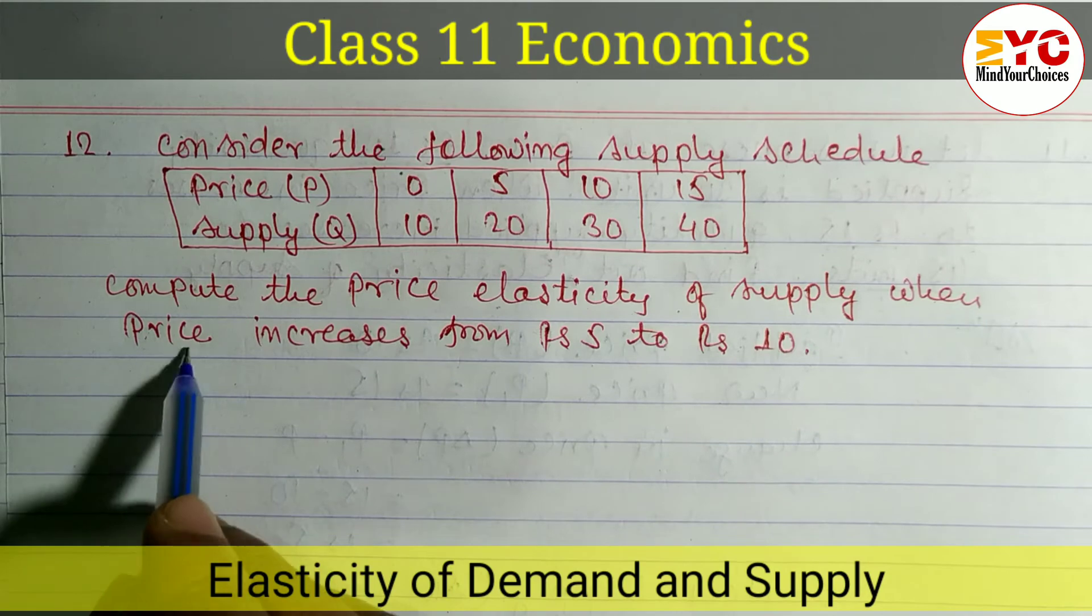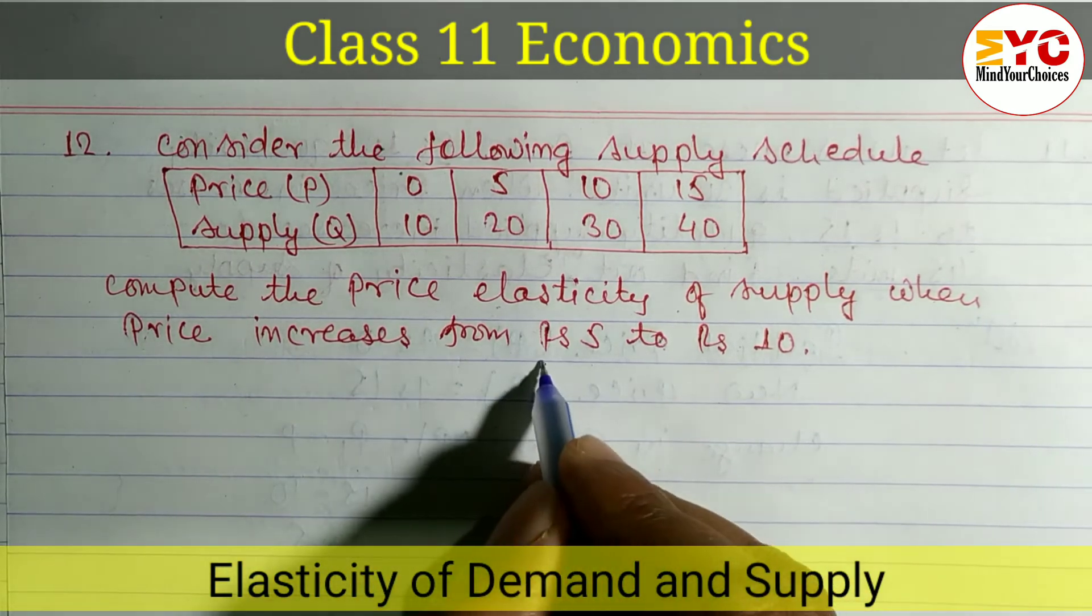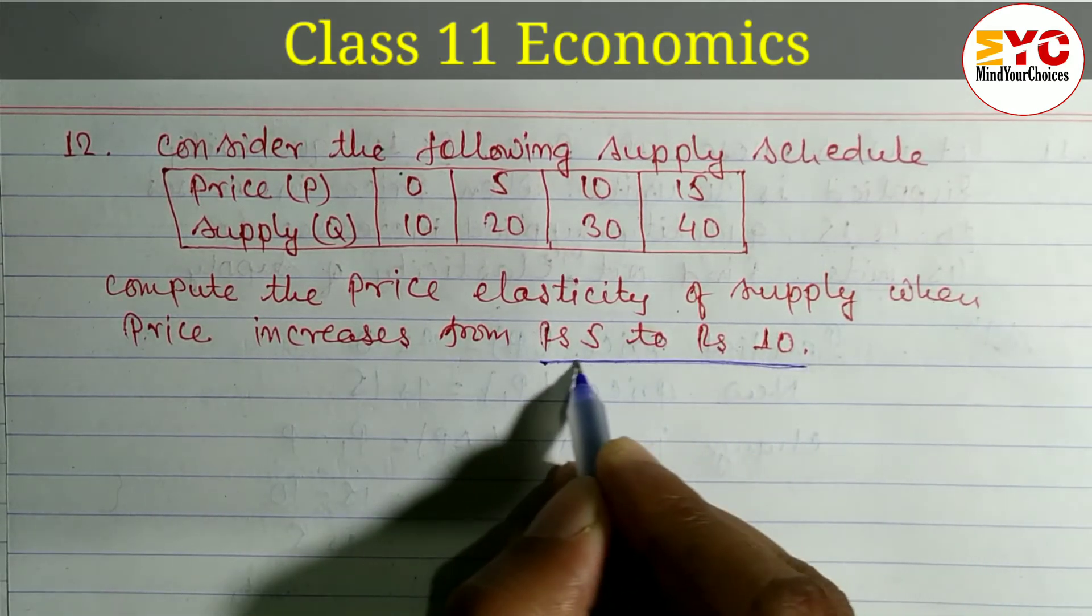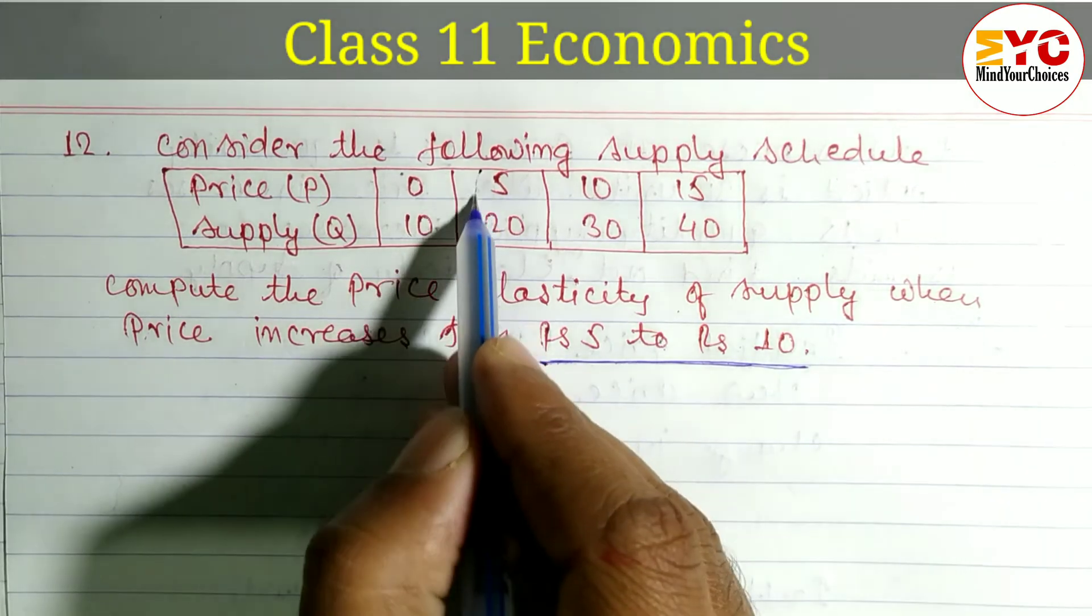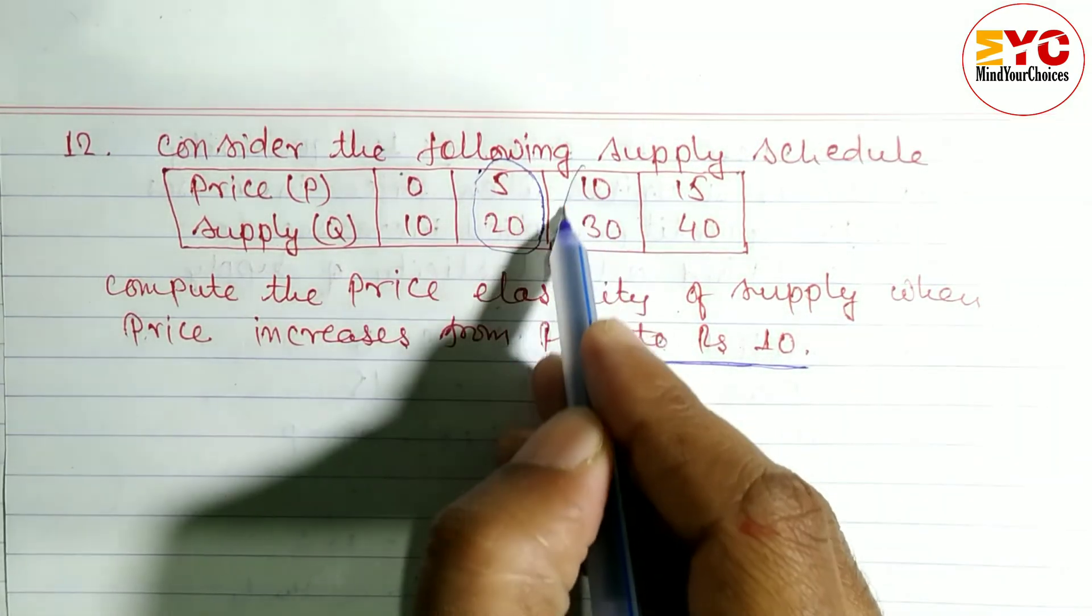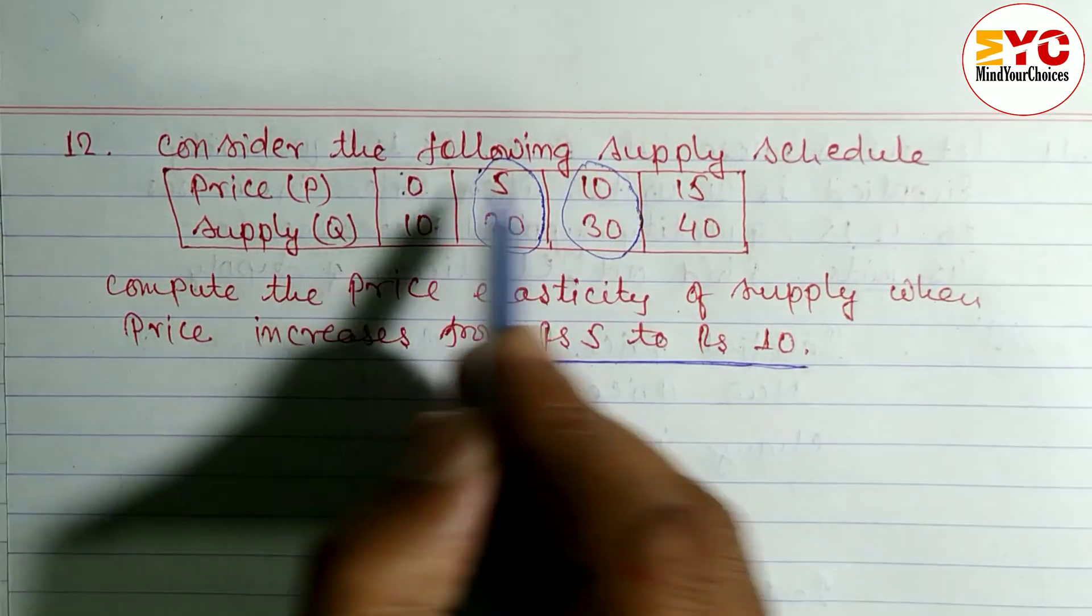Here we have to focus on Rs 5 to Rs 10. We have to look at Rs 5 and Rs 10, not Rs 0 and not Rs 15.